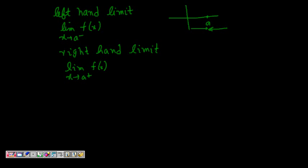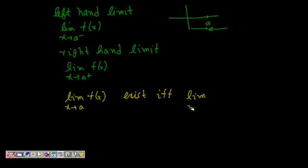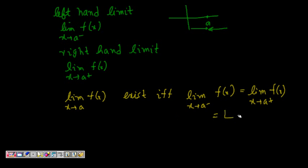We say that the limit of f(x) as x tends to 'a' exists if and only if the left-hand limit — limit as x tends to a minus of f(x) — is equal to the right-hand limit — limit as x tends to a plus of f(x). If both are the same value equal to L, we say that L is the limit. Also, f(a) need not be equal to L — it may be, but need not be.